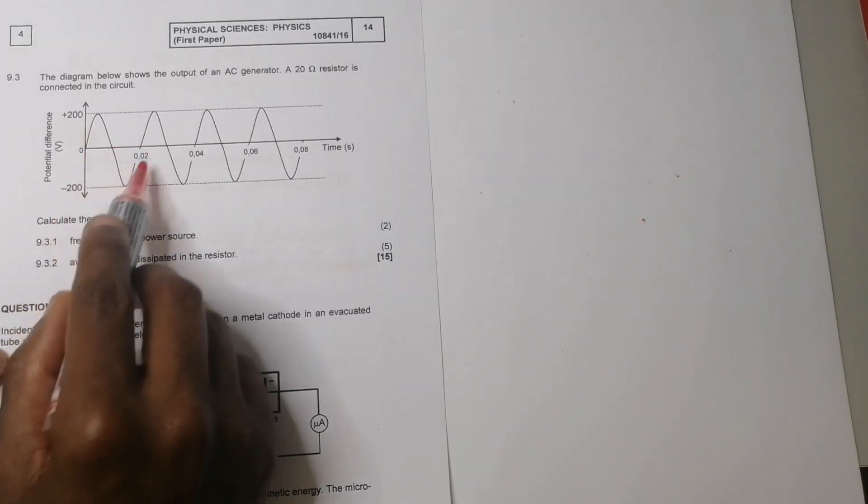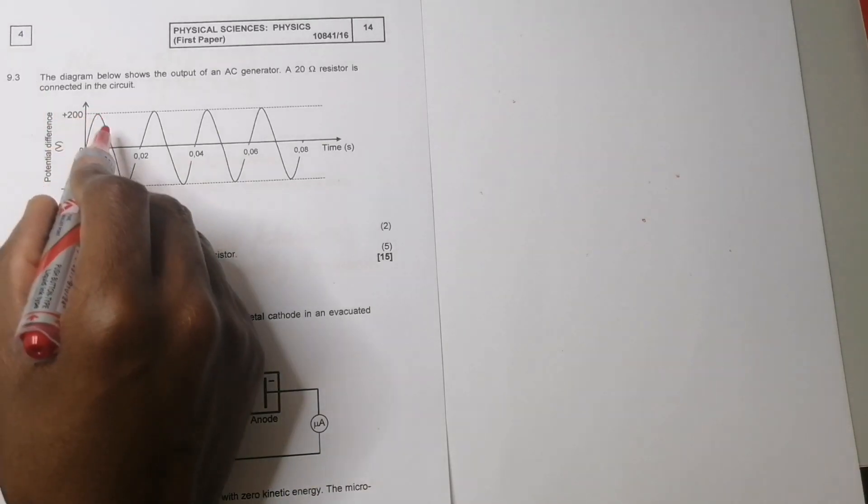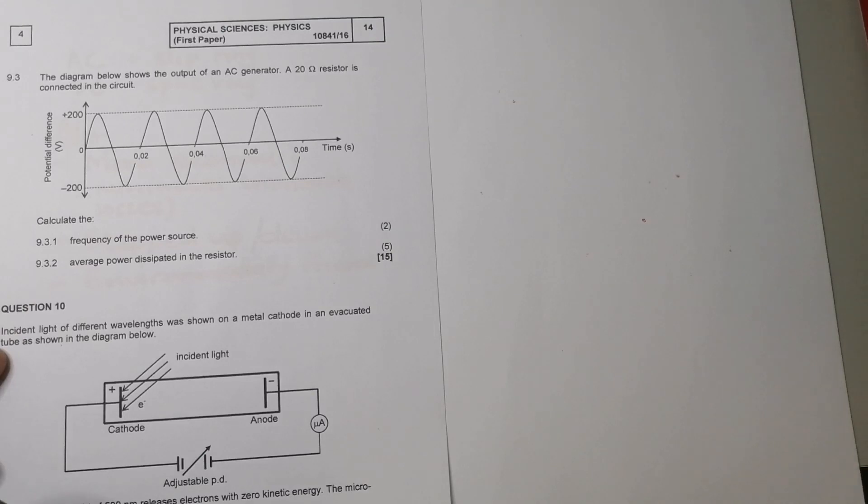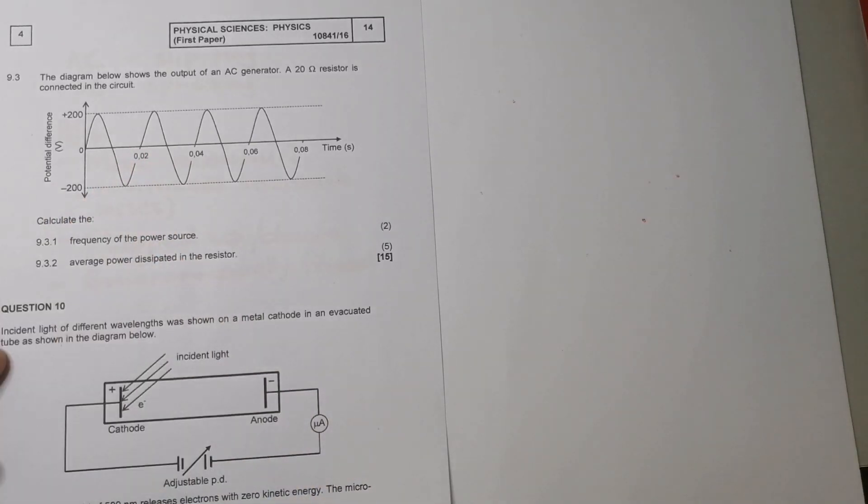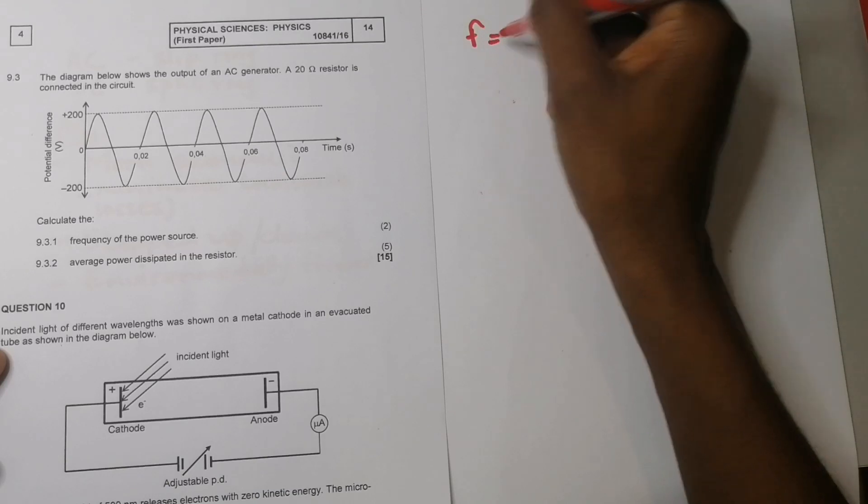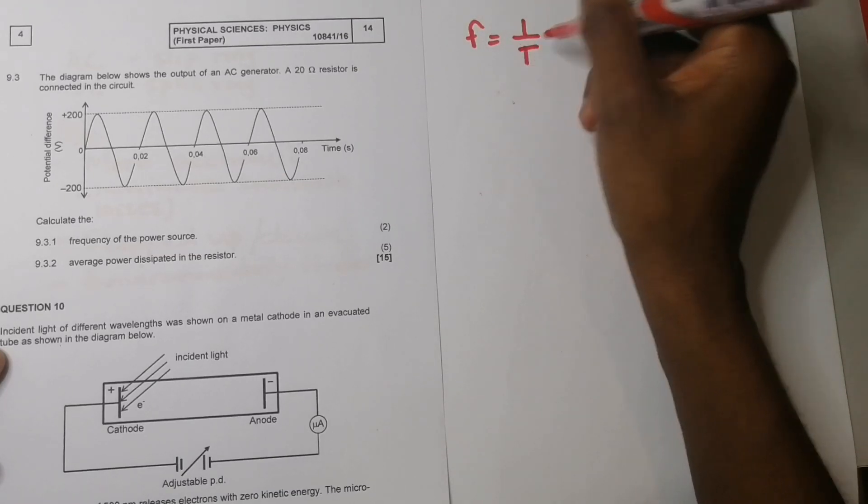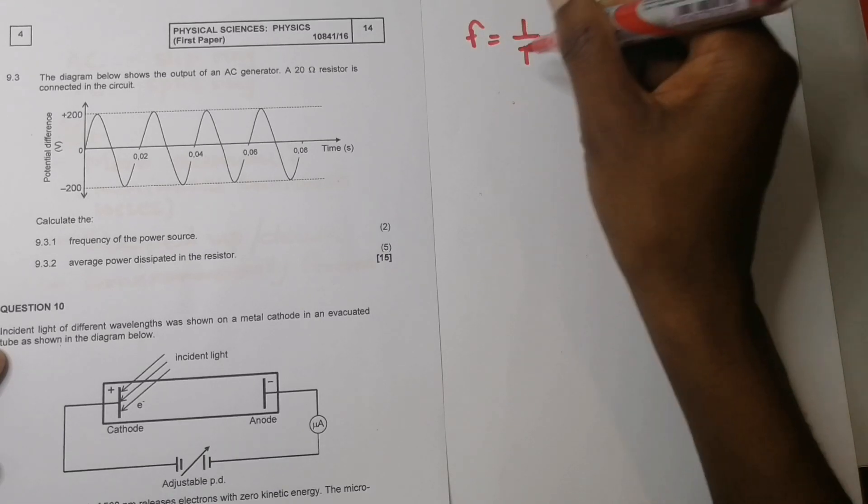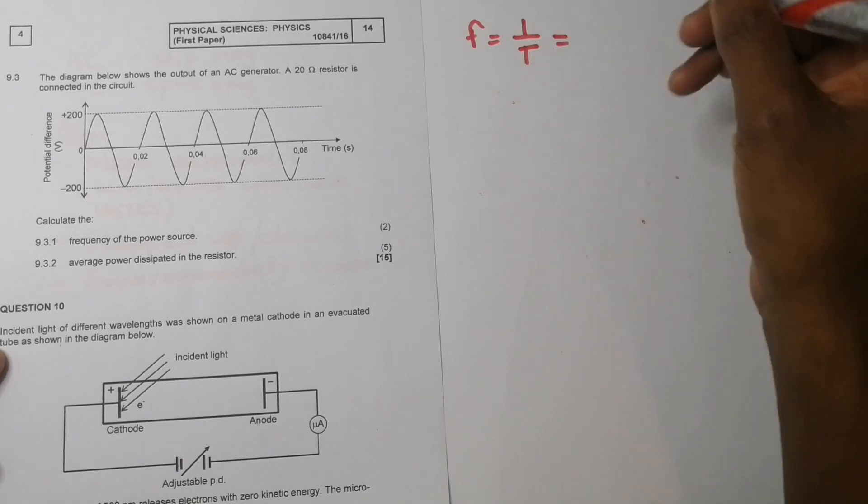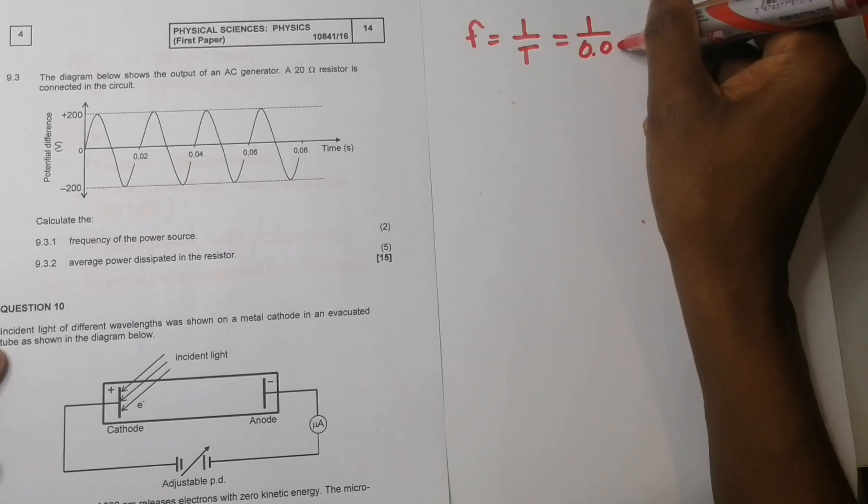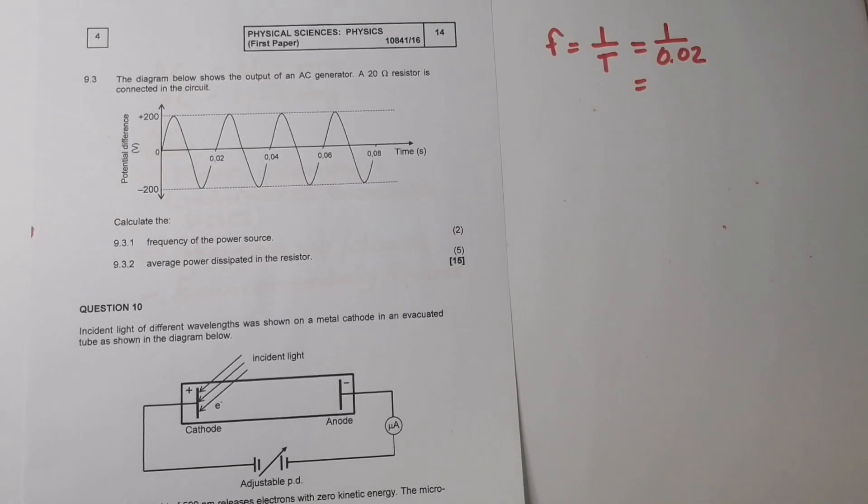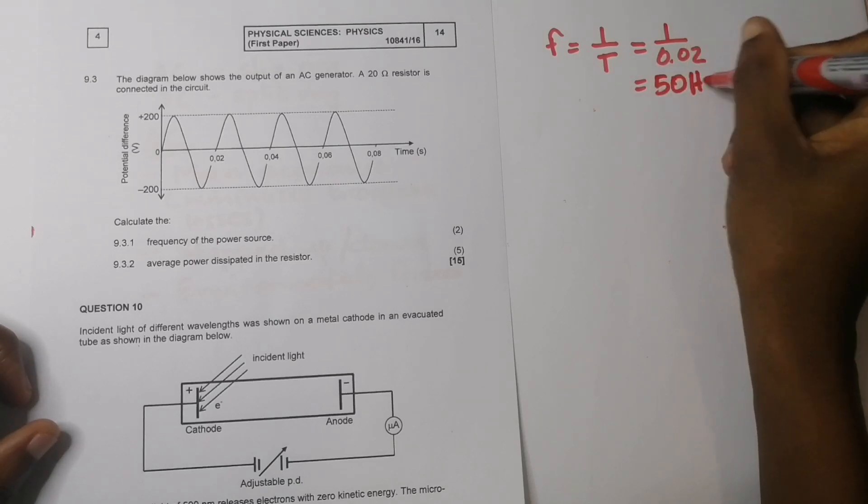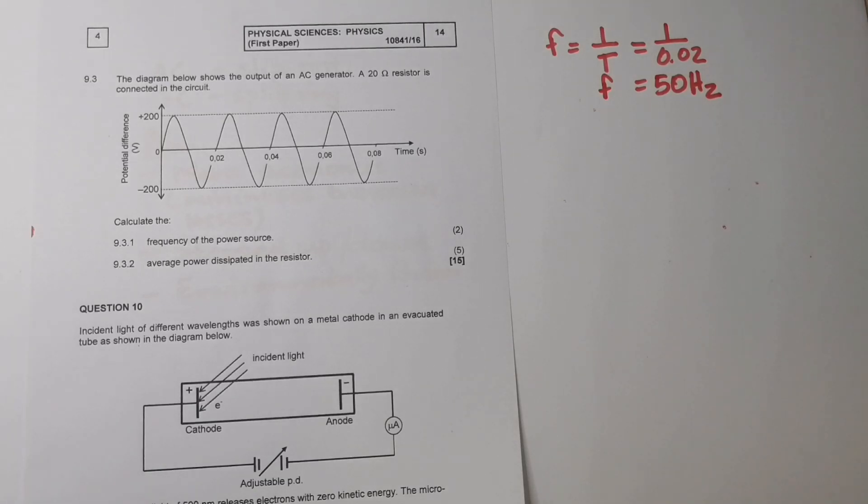And then they say to you, calculate the frequency of the power source. So how would I get the frequency? If you look at that, they gave me the period. Now, please remember, what is the period? It is the time taken to complete one cycle. So one cycle can be completed in 0.02. So then I can say, well, frequency is actually one over the period, because that's one cycle divided by the time to complete that one cycle in this case, which is 0.02. So that's one divided by 0.02. And that would give us 50 hertz.